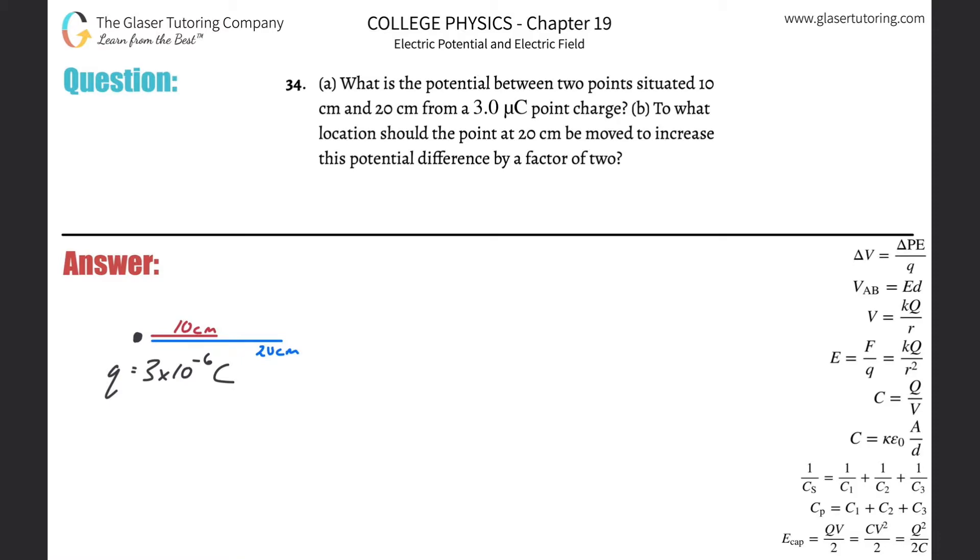Number 34, letter A: What is the potential between two points situated 10 centimeters and 20 centimeters from a 3 micro coulomb point charge? So here's the point charge, it's 3 micro coulombs or 3 times 10 to the minus 6 coulombs, and we want to find the potential between essentially the 10 centimeter point away from that point charge and 20 centimeters.